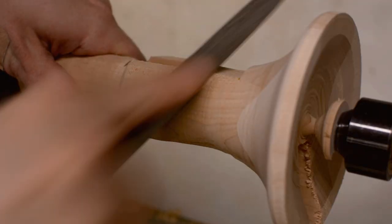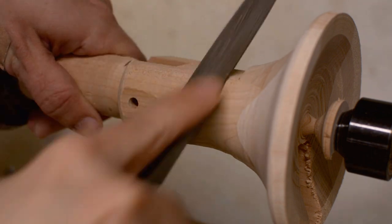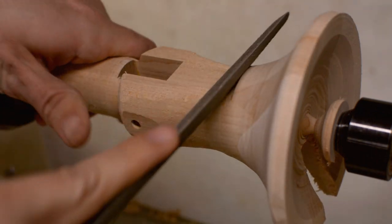Once I'm happy with the shape, I use a rasp to ease the transitions from the round sides to the flat front, and from the dress to the body.